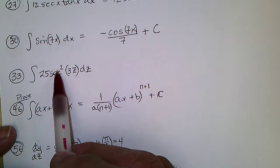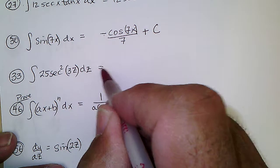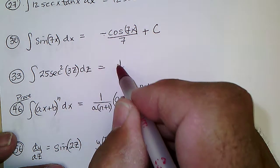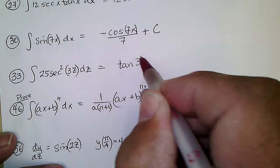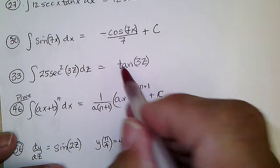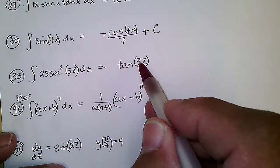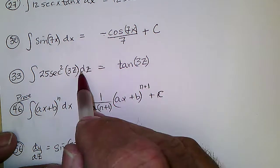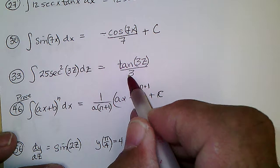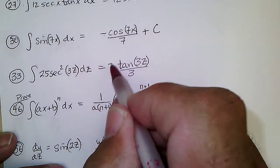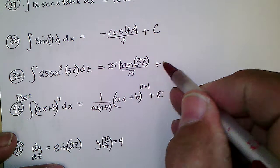Secant squared is the derivative of tangent, so this is going to be the tangent of 3z. But if we took the derivative of that, it would be secant squared of 3z times 3. We don't have the 3, so we have to divide out the 3. We do have a 25, so we carry that along, then plus C.